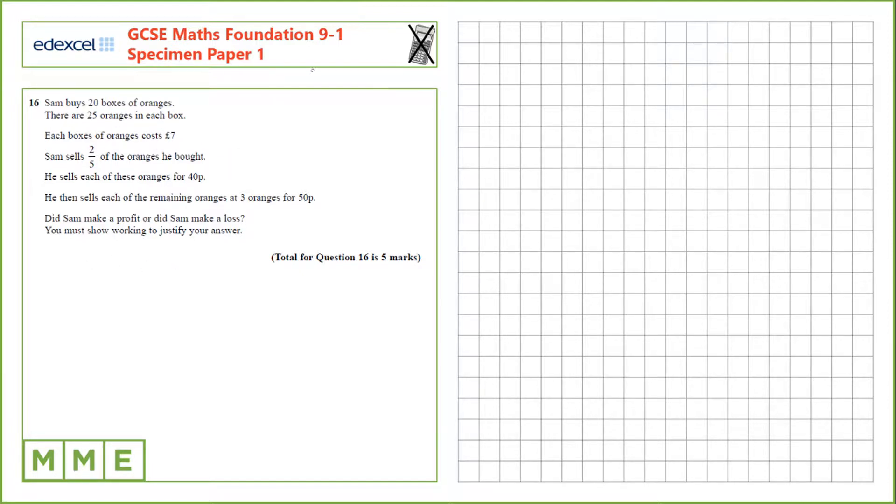So first let's figure out how many oranges he has. He has 20 boxes of oranges times 25 oranges in each box. So he starts off with 500 oranges. The cost of these oranges was £7 per box, so that's 7 times 20 which is £140 cost.